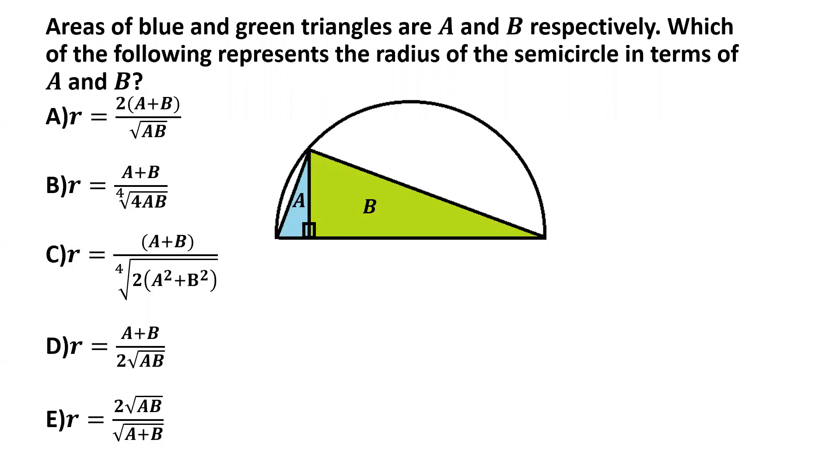So those are A and B, the blue triangle and the green triangle. Now the original triangle, let's start with putting some names so that it becomes easier to refer to these triangles. So let's call the original triangle within the semicircle as PQR and let's call the perpendicular from vertex P onto the longest side QR as PS.